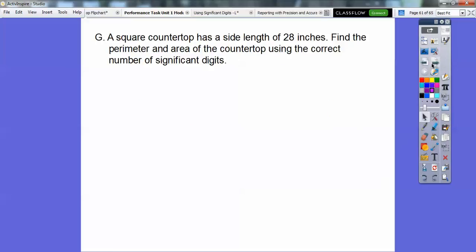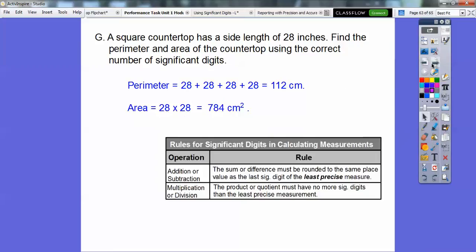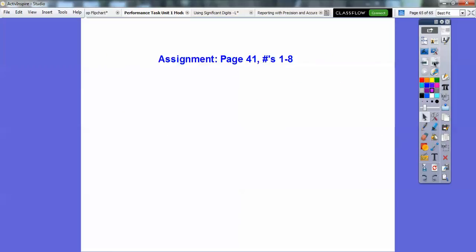Let's try one more. The square countertop has a side length of 28 inches. Find the perimeter and area of the countertop using the correct number of significant digits. Perimeter just means we're going to add up all four sides. There's our rules again. So I just slid that down. Here's the perimeter, 112 centimeters, and the area when we multiply. Remember, it's a square, so base times height is 28 times 28. So the sum or difference for significant digits right here has to be rounded to the same place value as the least precise. That's the only one that we have right there. So it has to be rounded to the one spot. So that's the answer right there. And then for the area, the product must have no more significant digits than this one. This has two significant digits, so we're going to round this to either 78 or 79, and it'll stay at 78, so 780 centimeters squared.